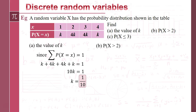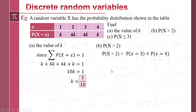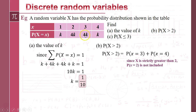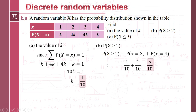Part B: what's the probability that x is greater than 2? I'll include this to highlight the issue surrounding inequality signs. Greater than 2 means those two values — specifically greater than 2, so 2 is not included. It's just x equals 3 and x equals 4. Since it's strictly greater than 2, the probability that x equals 2 is not included. We get 4/10 plus 1/10, so the probability that x is greater than 2 is 5/10.